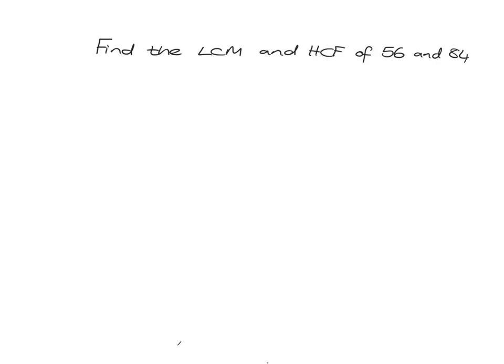But this method, using prime factorization, is going to be very useful when you have quite big numbers that you need to find the lowest common multiple and highest common factor of. We're going to start by finding the lowest common multiple and highest common factor of 56 and 84 using prime factorization.